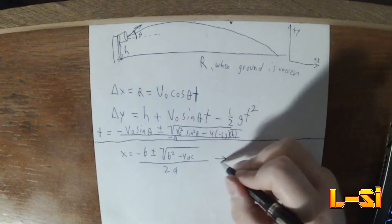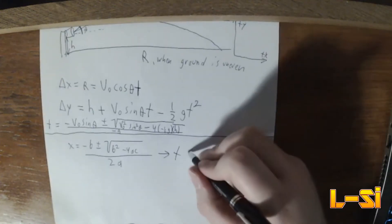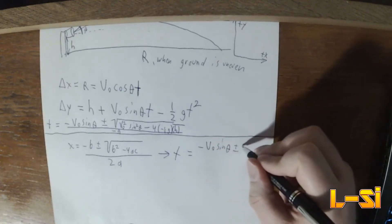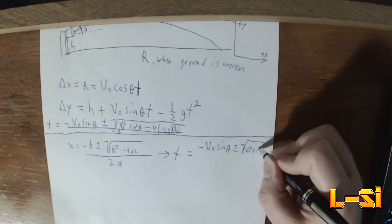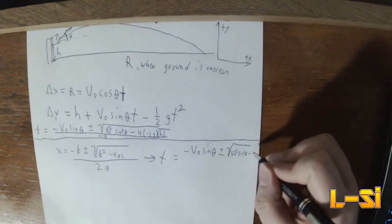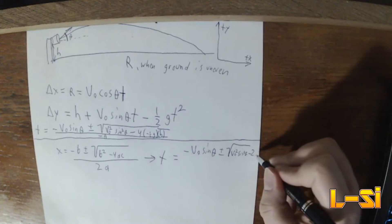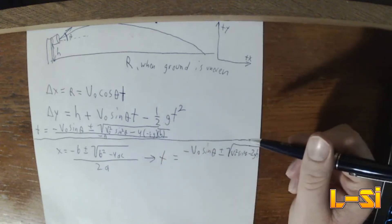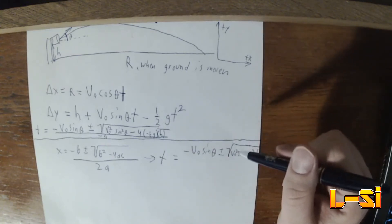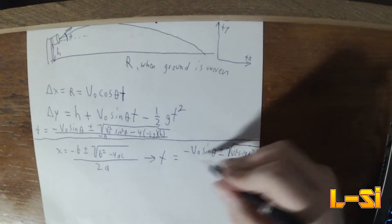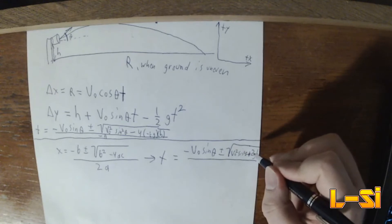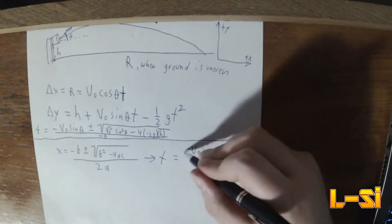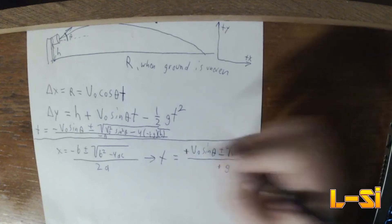So we can just say that time is equal to negative V-naught sine of theta plus or minus V-naught squared sine squared of theta minus. And I'm going to simplify this into 2GH. Because that's 4 times the negative half and the negative of that. So it should actually be plus 2GH. And then all over G, because I actually just realized that there's a negative here, and there's going to be a negative here. So those cancel into a positive.